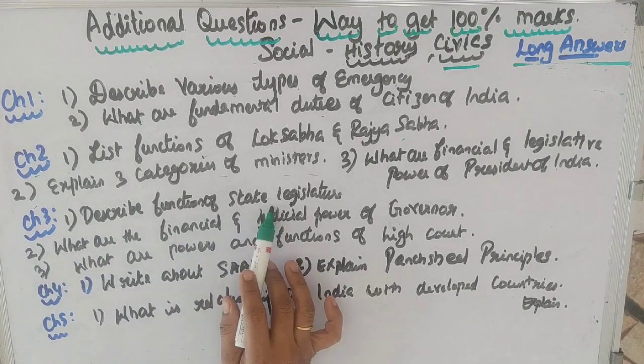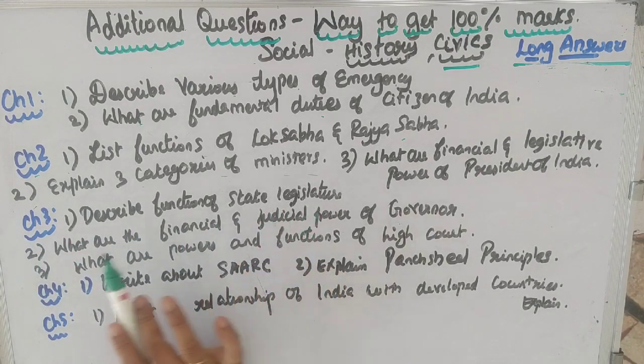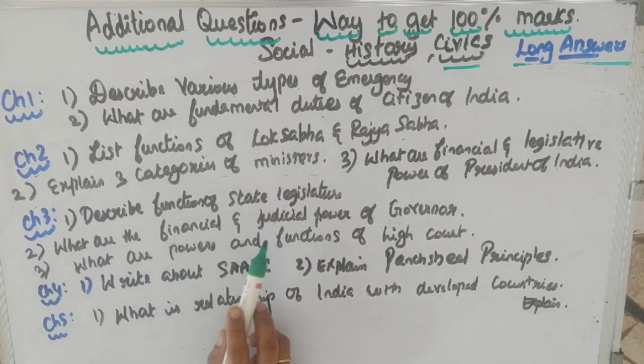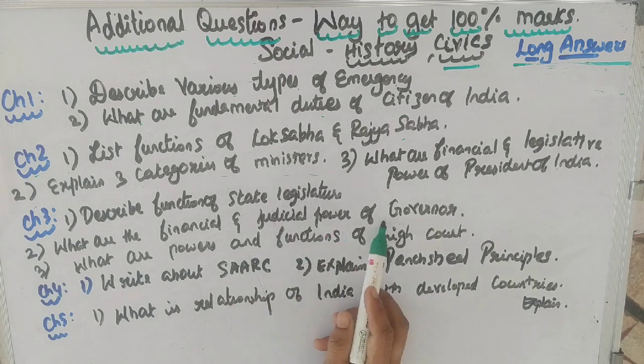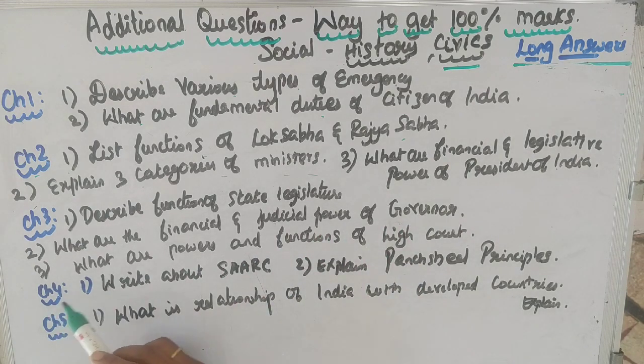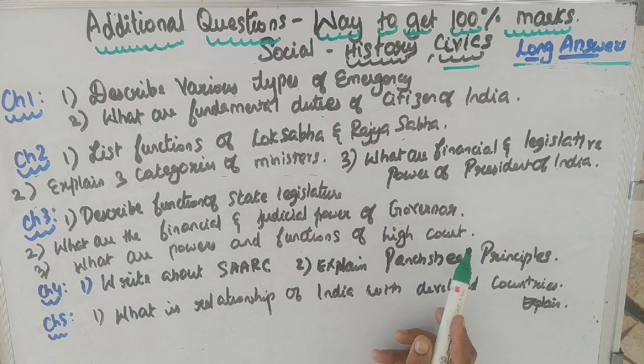Chapter 3: describe the functions of the state legislature. What are the financial and judicial powers of the Governor? Third question: what are the powers and functions of the High Court?